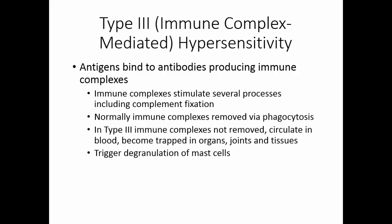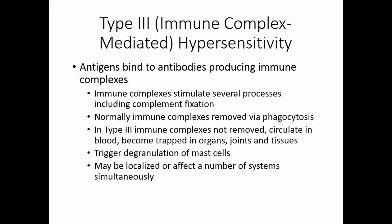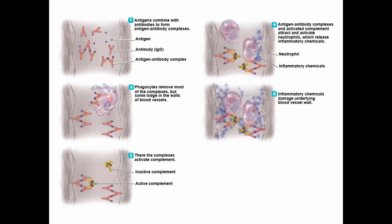Because immune complexes can trigger degranulation of mast cells, we may get localized inflammation, or the inflammation may affect a number of systems simultaneously. We treat this condition with steroids. Here we see an antigen and an antibody circulating in the bloodstream forming immune complexes. Phagocytes typically take them out, but if there are too many of them or the phagocytes can't move fast enough, these antigen-antibody complexes will start to accumulate on tissues. These immune complexes activate complement, which calls other phagocytic cells to the area. These cells release immune chemicals to start inflammation and try to remove the immune complexes. As a result, there's significant tissue damage and increasing amounts of inflammation.